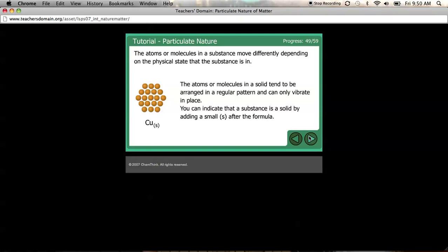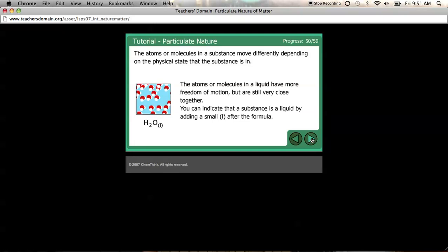All right. And we can review what we just saw. So the atoms or molecules in a substance move differently depending on the physical state. So in a solid, they're going to be in a regular pattern. They can really only vibrate in place. In a liquid, they have a little bit more freedom of motion. They're still very close together. And in a gas, they're way far apart. They move really fast. And there you go.